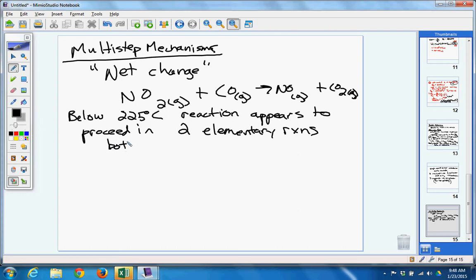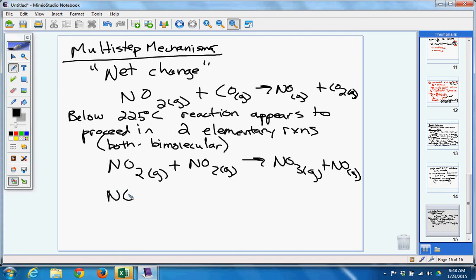So two elementary reactions, both are bi-molecular. So this is what they look like. Now, NO2 plus NO2 makes NO3 plus NO. And then from there, NO3 plus CO is going to make NO2 plus CO2 gas. So they're both bi-molecular. And that's a two-step mechanism.